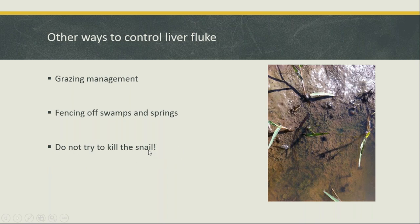Some people suggest killing the snails with copper sulfate to get rid of liver fluke — that's what people tried many years ago. It doesn't work well because you might knock out this generation of snails but there'll be egg sacs sitting around that won't get killed by the chemical, and they'll hatch again when the chemical washes away. More importantly, you'll kill pretty much everything else in the little swamp ecosystem. The key takeaway is: use grazing management and fencing rather than trying to kill snails chemically.